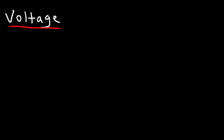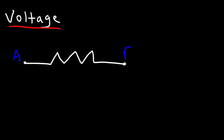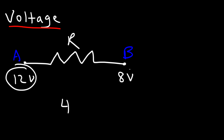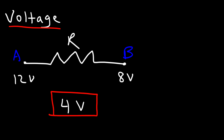What exactly is voltage? Voltage can be described as an electromotive force, also a potential difference — a difference in electric potential between two points. For instance, let's say we have two points, point A and point B. At point A the electric potential is 12 volts, at point B it's 8 volts. The voltage is the difference: 12 minus 8 is 4, so the voltage across this resistor is 4 volts.